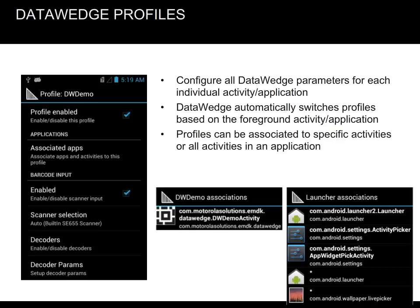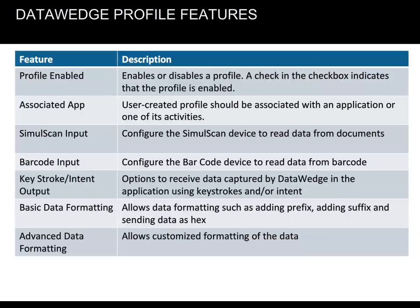Data Wedge uses profiles to customize data capture parameters for each activity or application. Also, Data Wedge automatically switches profiles based on the foreground activity or application. Finally, profiles can be associated to specific activities or all activities in an application. Listed here are the Data Wedge profile features along with a short description for each. Take a few minutes to become familiar with them.